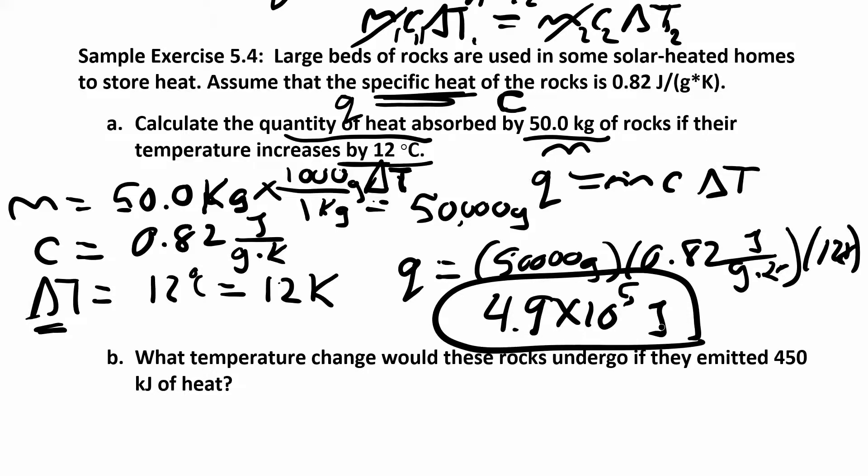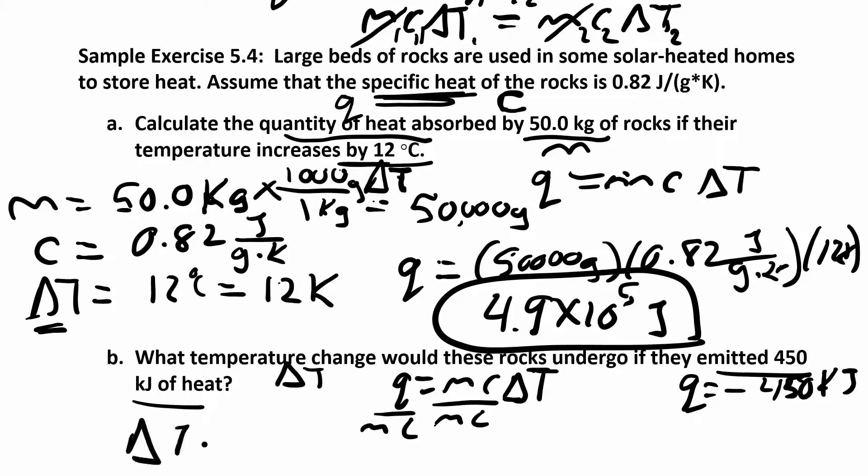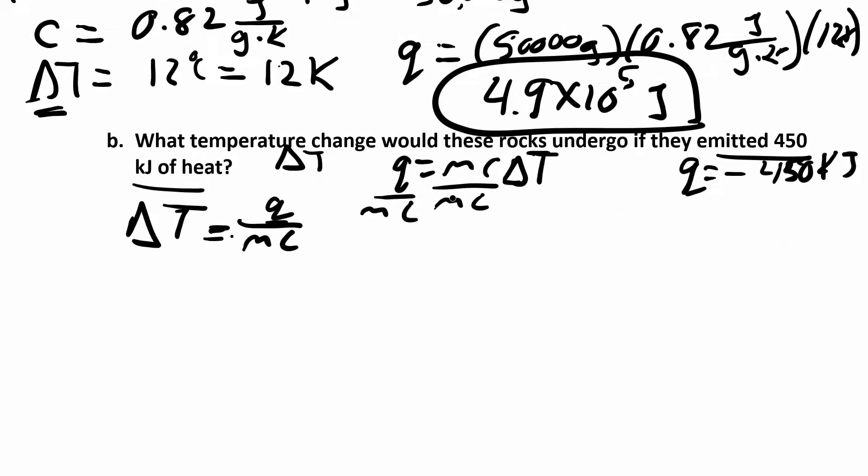Now, similar, we can add on to this problem a little bit using the same equation. What temperature change would you expect these rocks to undergo if they emitted, so they're releasing, so that's negative, they're releasing this much heat. So their q is negative 450 kilojoules. Your specific heat is still the same, your mass is still the same, we didn't change that. So if I had q equals mcΔT and I want to solve for ΔT, I can rearrange this equation. I can just divide by mc. So I get ΔT is just q over mc. If you like to plug everything in and then solve, you can do that too. That's perfectly fine.